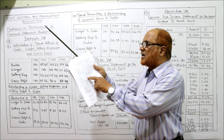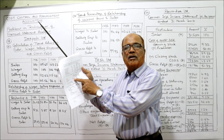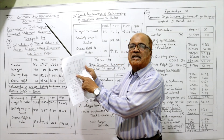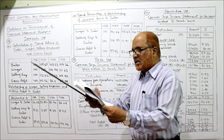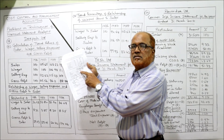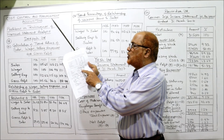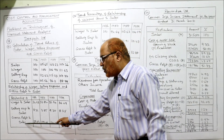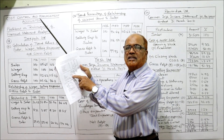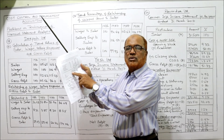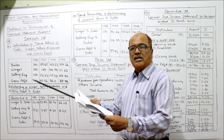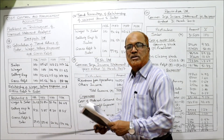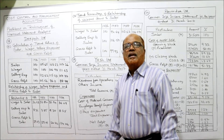Similarly for selling expenses: selling expenses are 25,750 in the numerator, sales 3,10,000 in the denominator — 25,750 divided by 3,10,000 into 100 gives 8.31. Second: 29,000 divided by 3,27,500 into 100 gives 8.85. For gross profit to sales: 90,000 divided by 3,10,000 into 100 gives 29.03. Second: 95,000 divided by 3,27,500 into 100 gives 29.01.